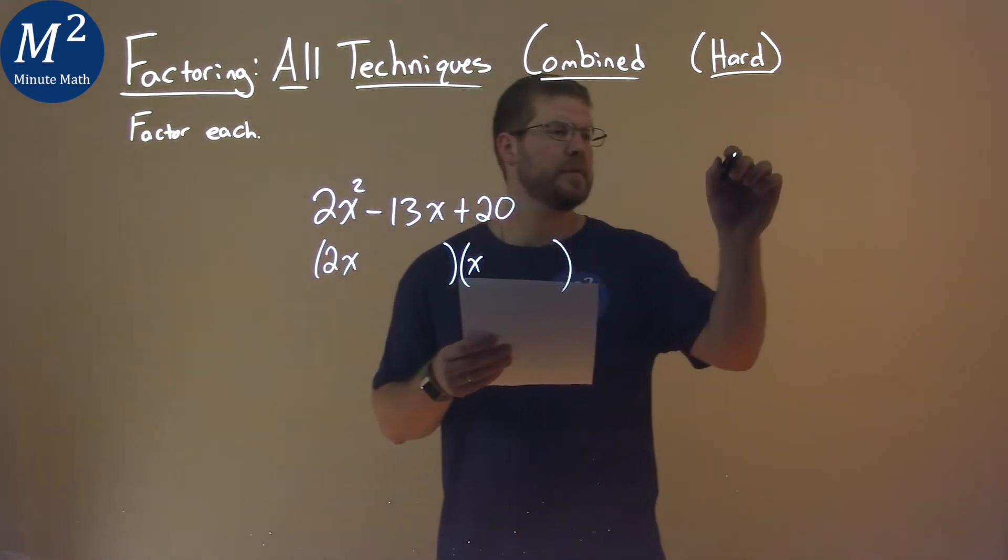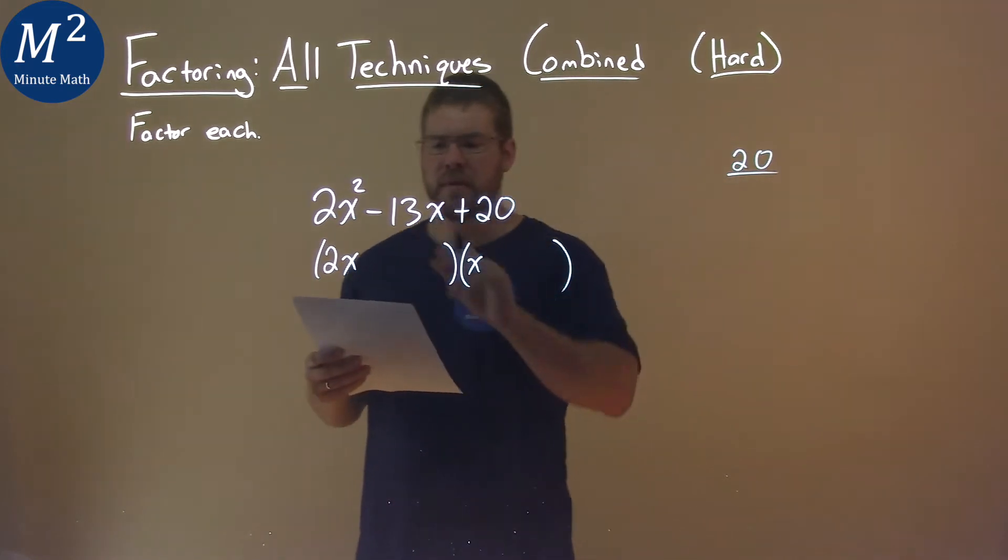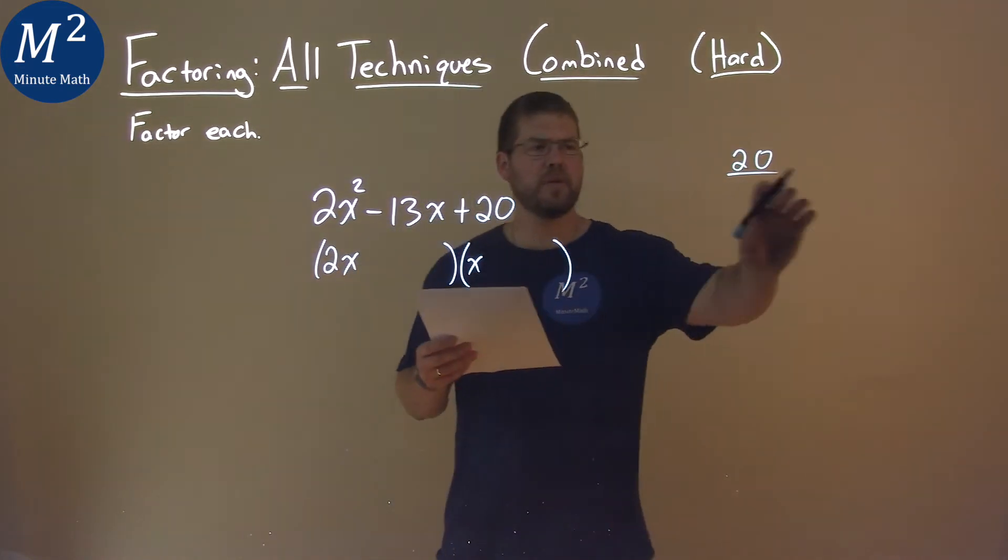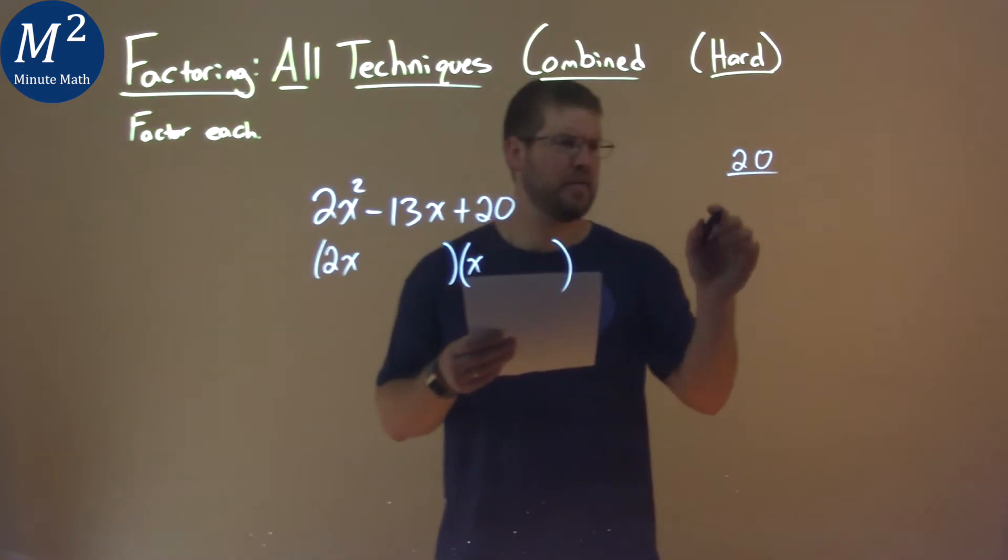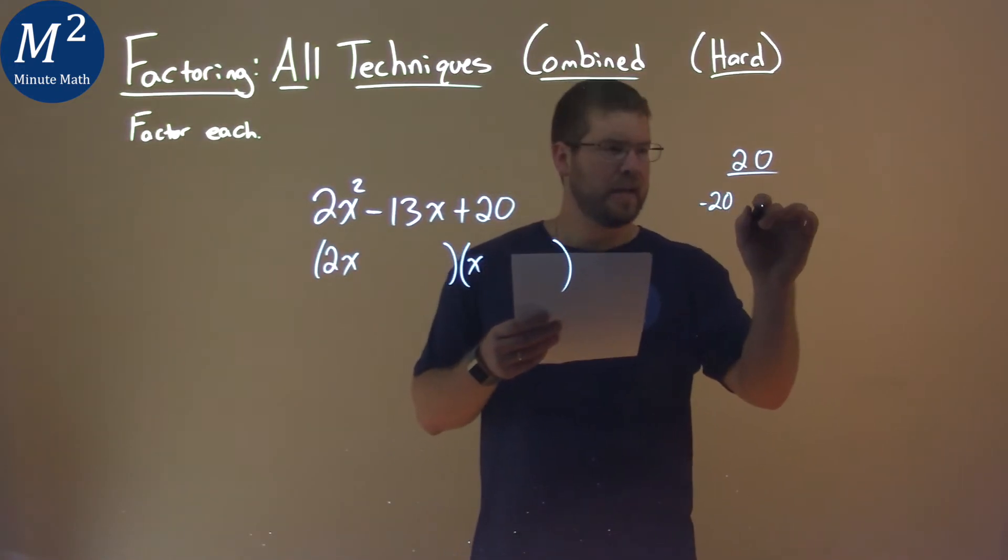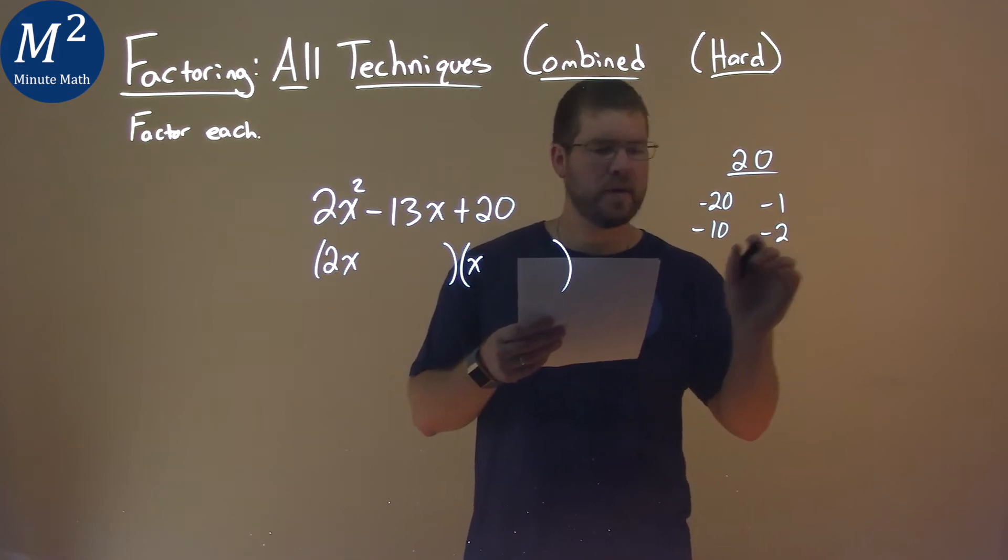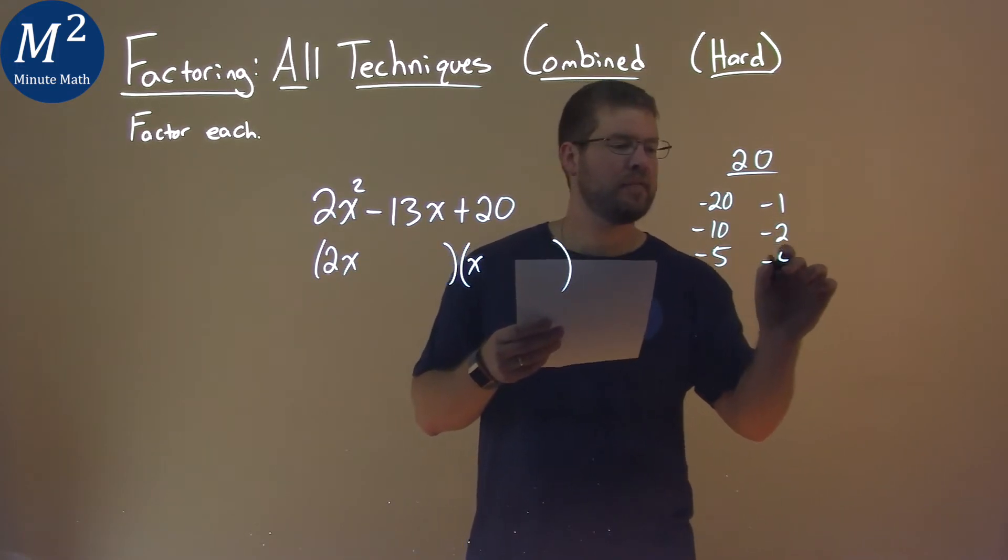Now our c value is 20, but notice our b value is negative. That means the two numbers that multiply to be 20, both will have to be negative. So let's go find some pairs. Negative 20 and negative 1, negative 10 and negative 2, and negative 5 and negative 4.